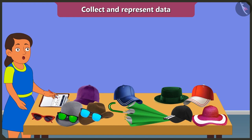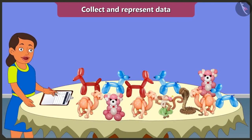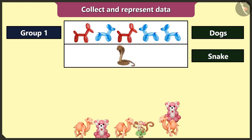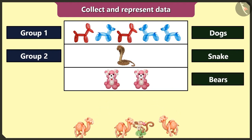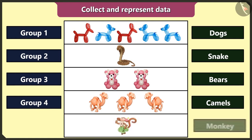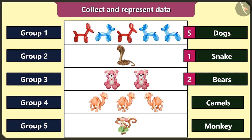My birthday is approaching. So I will collect data about the types and how many balloons I have so I can gift them to all my friends coming to my birthday party. First I will make groups of similar animal-shaped balloons: first group of dog-shaped balloons, second group of snake-shaped balloons, third group of bear-shaped balloons, fourth group of camel-shaped balloons, and fifth group of monkey-shaped balloons.